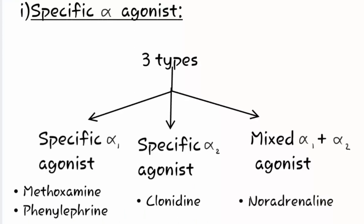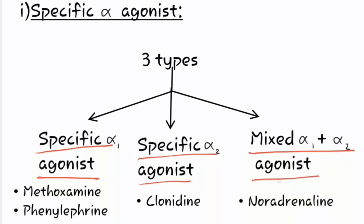Specific alpha agonists can again be classified into three types: first is specific alpha-1 agonist, second is specific alpha-2 agonist, and third is mixed alpha-1 and alpha-2 agonist. Examples of specific alpha-1 agonists are methoxamine and phenylephrine. The example of specific alpha-2 agonist is clonidine. The example of mixed alpha-1 and alpha-2 agonist is noradrenaline.